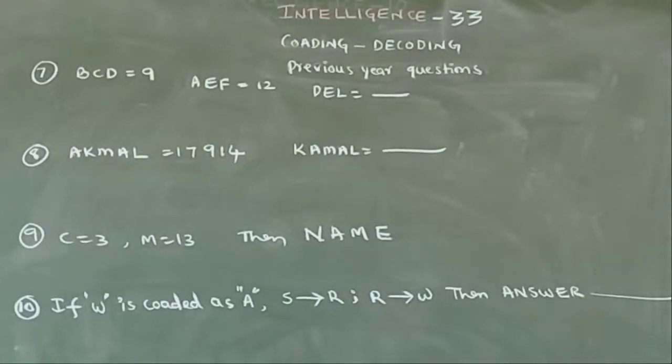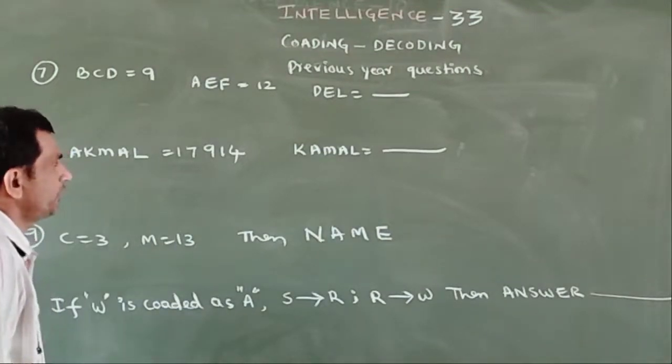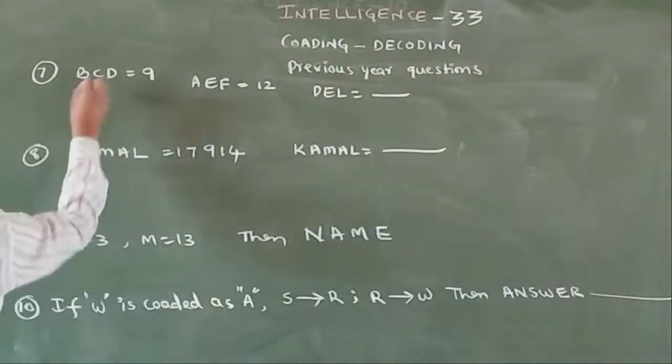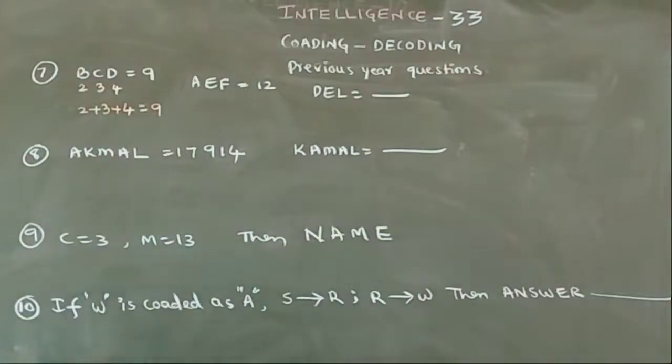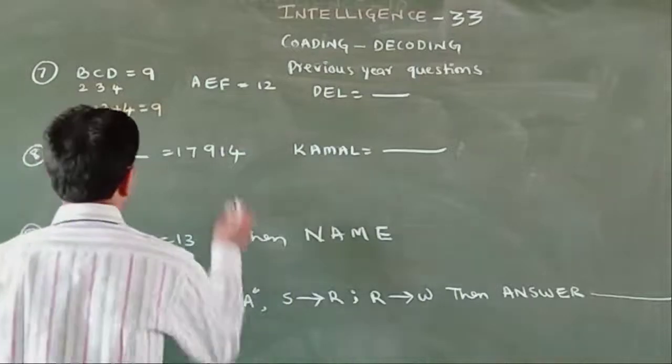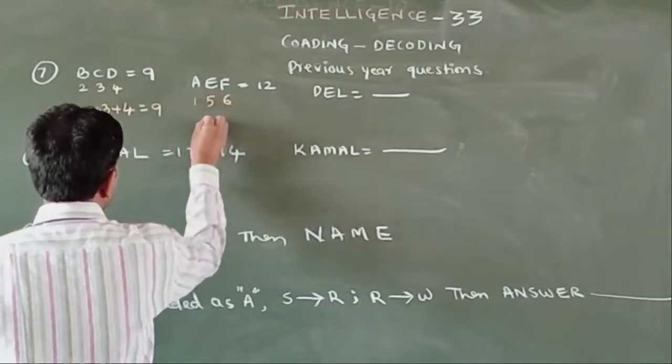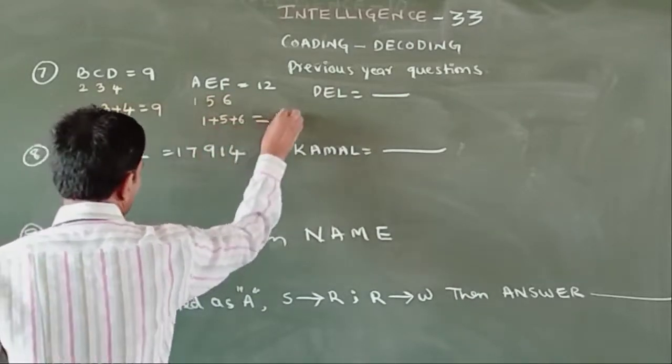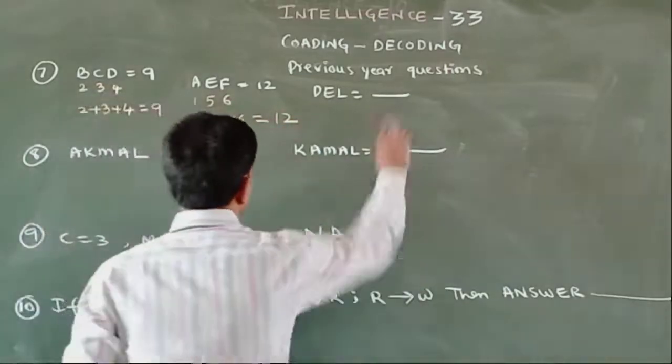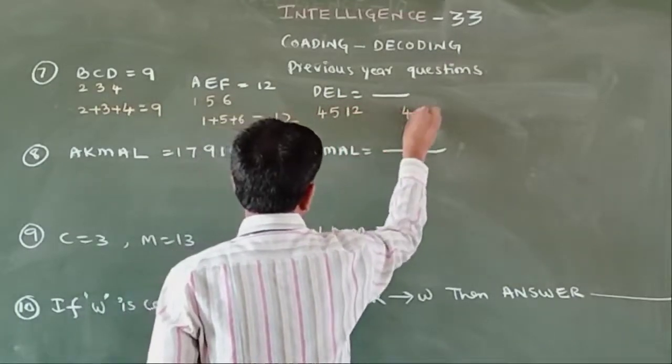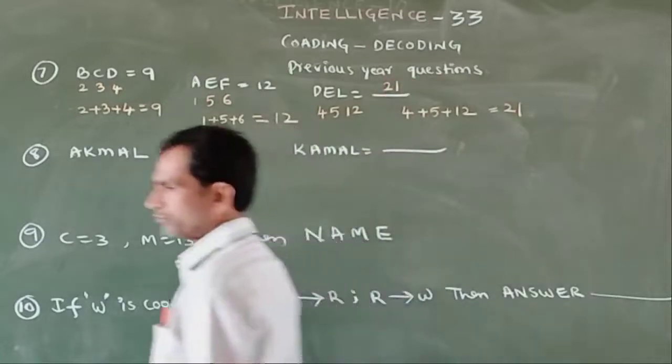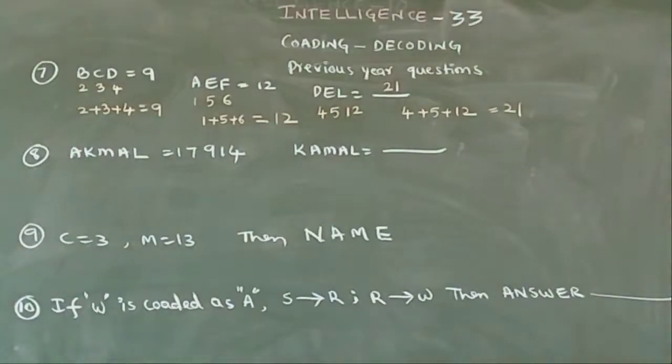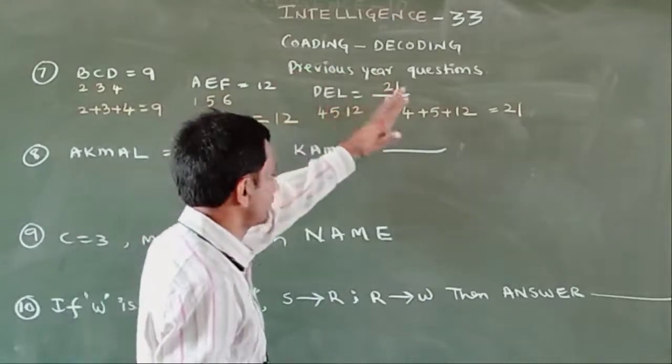Copy and study. BCD equals 9, AEF equals 12, then DEL equals how much? B is 2, C is 3, D is 4. 2 plus 3 plus 4 equals 9. A is 1, E is 5, F is 6. 1 plus 5 plus 6 equals 12. D is 4, E is 5, L is 12. 4 plus 5 is 9, 9 plus 12 is 21. Answer is 21.